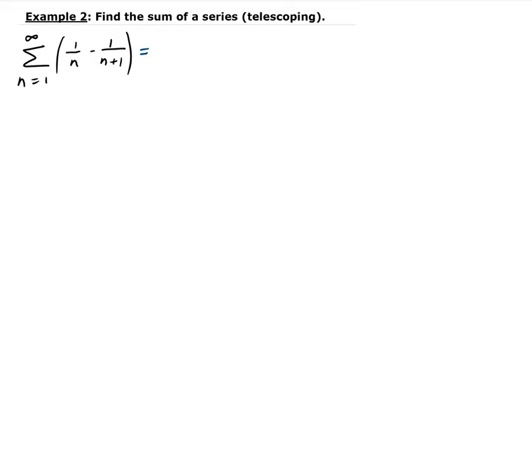Let's start by expanding this. When n is 1, we get 1 minus 1/2. When n is 2, we get 1/2 minus 1/3. When n is 3, we get 1/3 minus 1/4. And let's do one more. When n is 4, we get 1/4 minus 1/5, and so on.